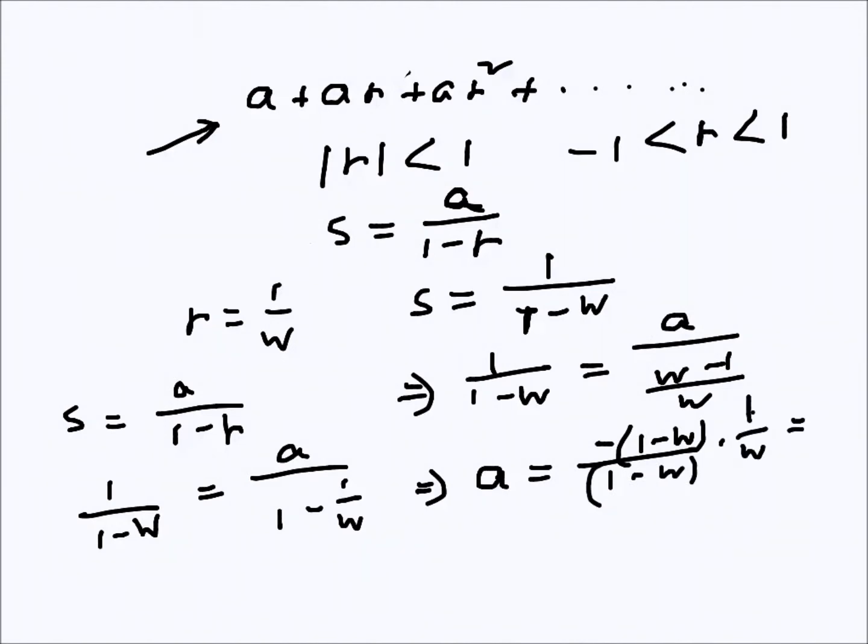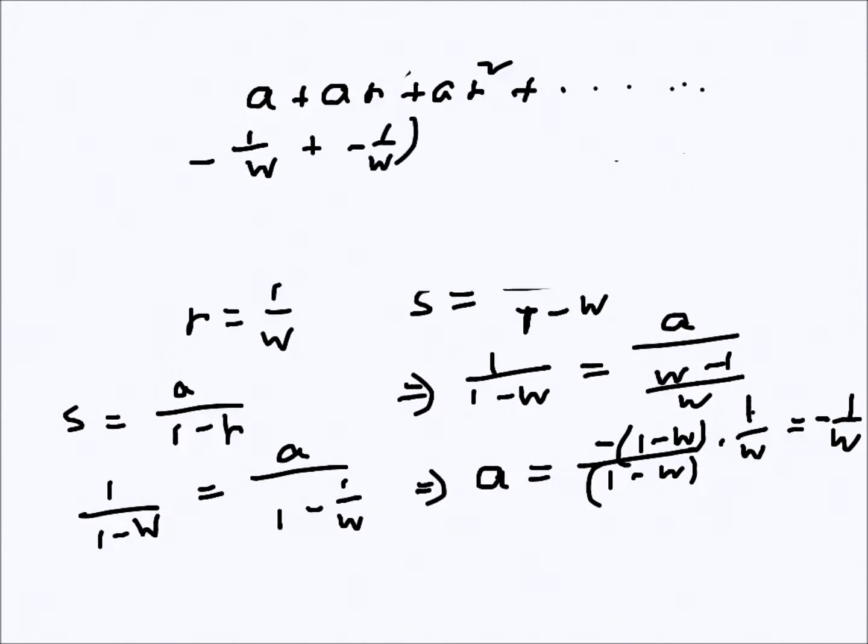So we're getting the series now. The series is a, which is -1/w, plus a times r where r is 1/w, plus the next term.